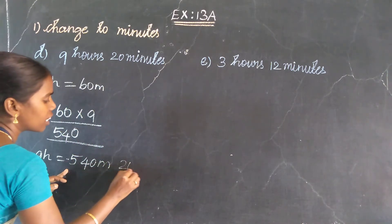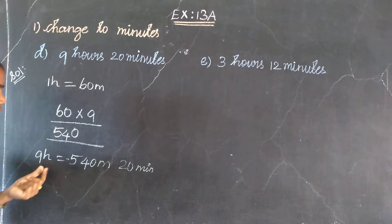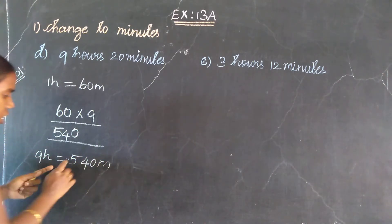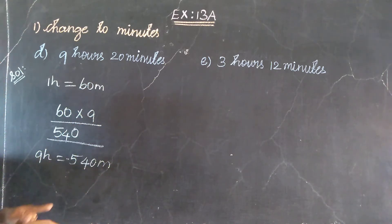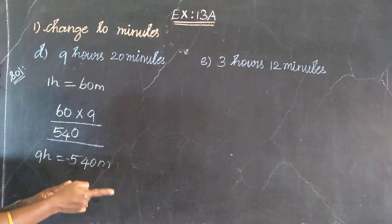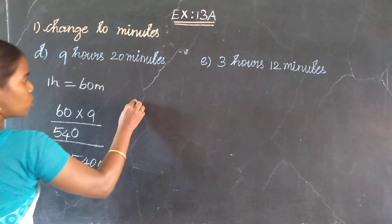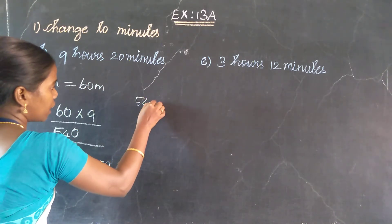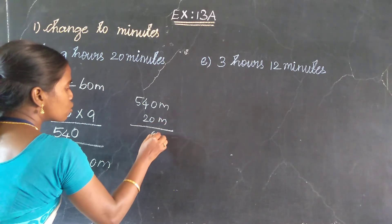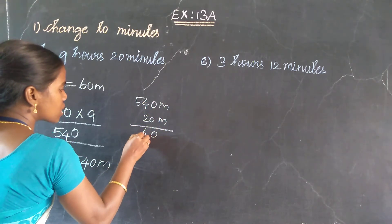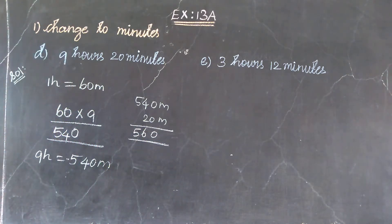Okay. Next, in 20 minutes — already the hours are changed. The minutes are already in minutes. So, total: add the two minutes together. 540 minutes and 20 minutes. Add: 0 plus 0 is 0, 4 plus 2 is 6, 5. So, 560 minutes.